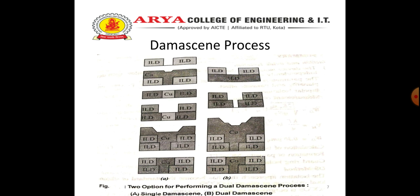Next, a thin barrier metal such as Ti, Ta, TiN, or TaN is deposited. Third, copper is deposited to a thickness greater than the oxide recess, filling the trenches. Finally, excess copper is removed by CMP — chemical mechanical polishing. ILD here stands for interlayer dielectric.